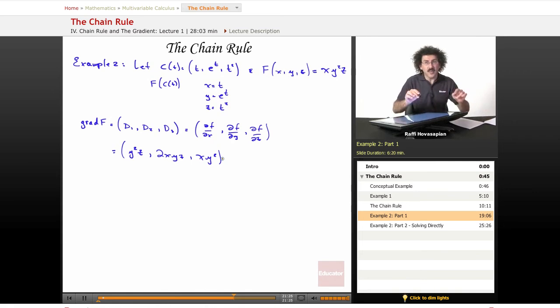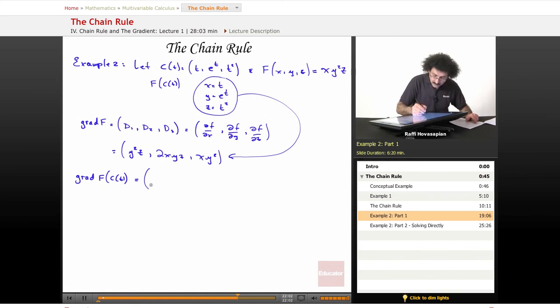Now, my gradient of f evaluated at C(t). Now we'll take the next step. All that says is I take my gradient f and I just put in the values C(t) in here. Well, x is t, y is e^t, z is t². So when I put these things into here, here's what I get. It's going to end up being t²e^(2t). y² is just e^(2t), z is t².